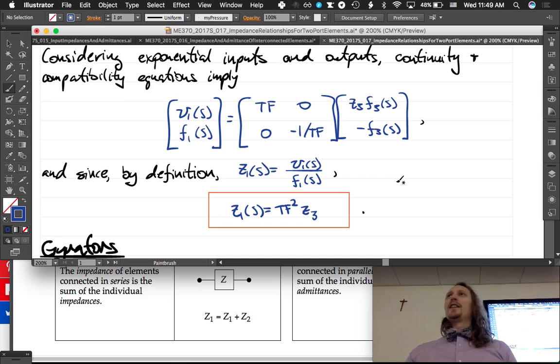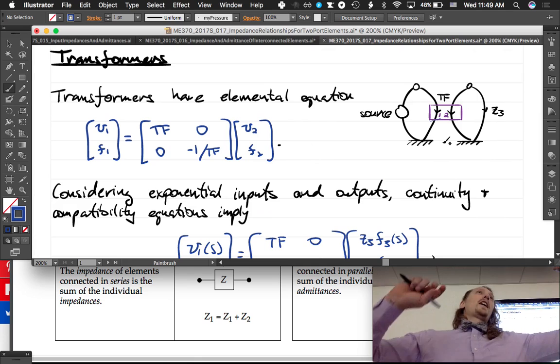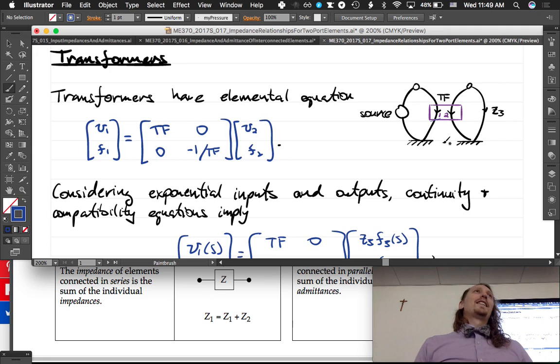The result is that you just square the transformer ratio and multiply it by the impedance on the other side, and you get it through. So we sometimes call this reflecting the impedance through the transformer, and you just square the transformer ratio. This is a very general situation. We can always say there's a transformer here. The impedance on the left side is equal to the impedance on the right side times the transformer ratio squared.